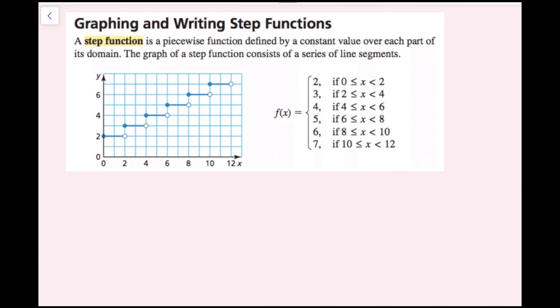A step function is a piecewise function defined by a constant value over each part of its domain. The graph of a step function consists of a series of line segments. Each section is a horizontal line, meaning the function equals a constant over each interval. It looks like a staircase — hence the name step function.